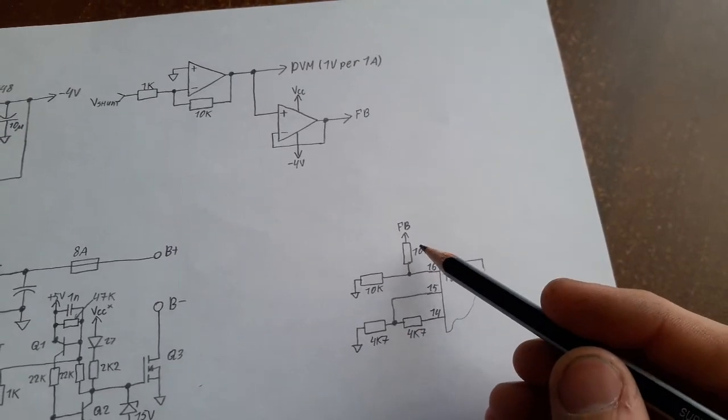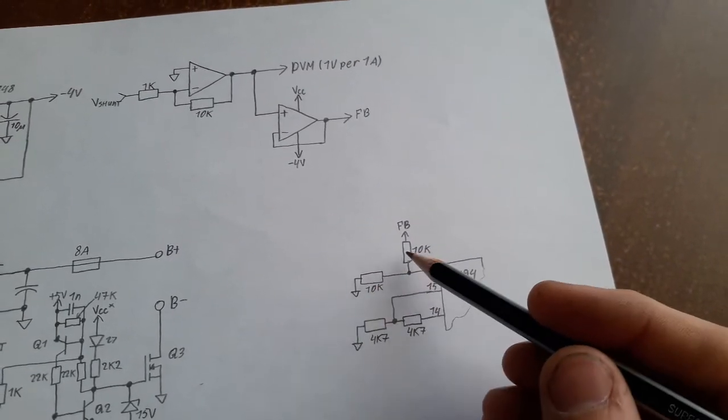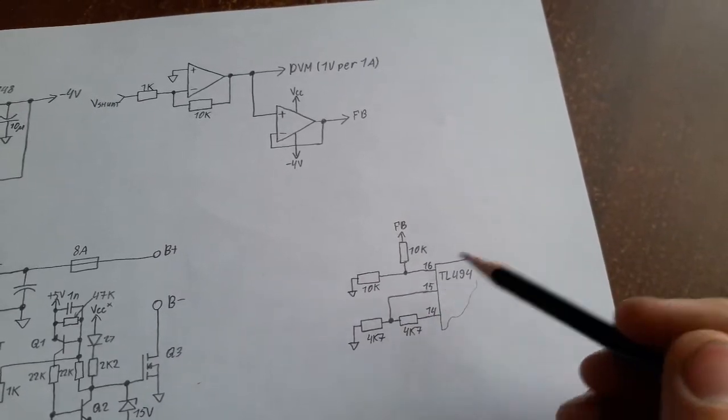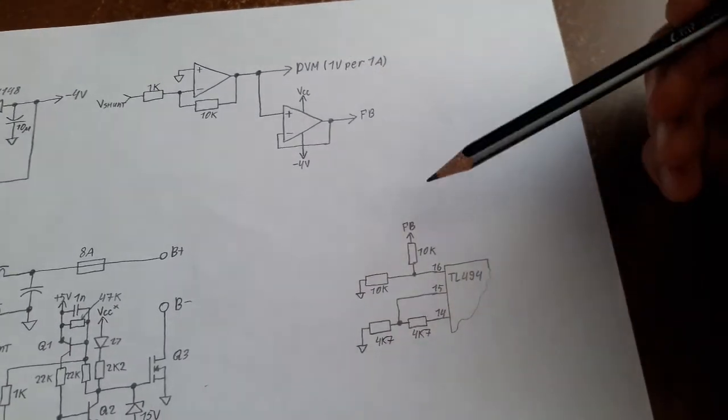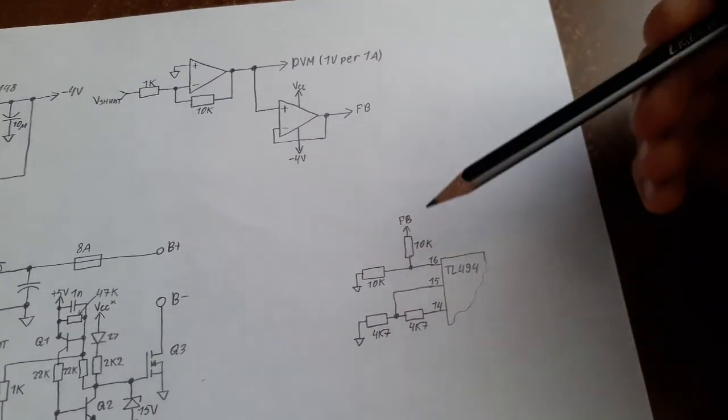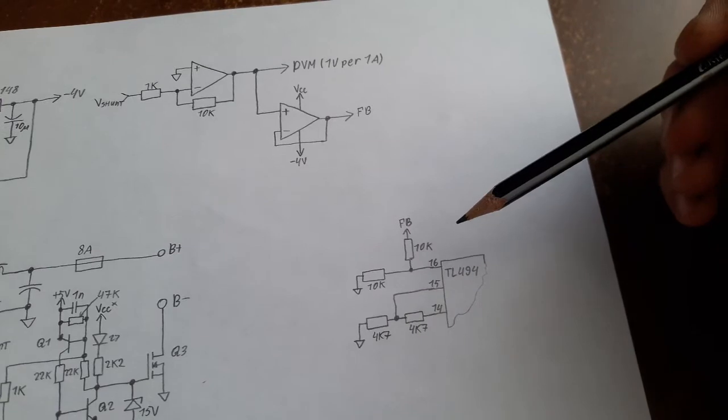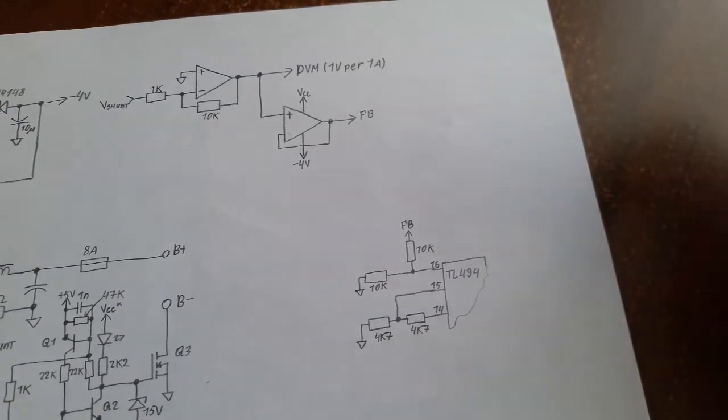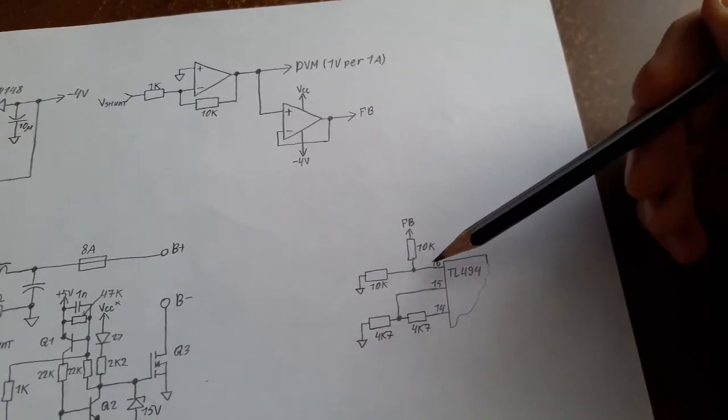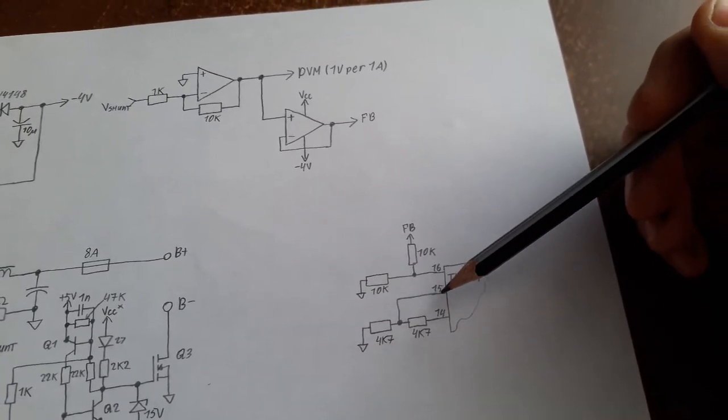And here I have a divider which has a transfer function just like this one, but with different values, 0.5. So in order for the chip to regulate, it will start decreasing the current, decreasing the voltage, and thus regulating the current, when the voltage here will get to the same amount as here.